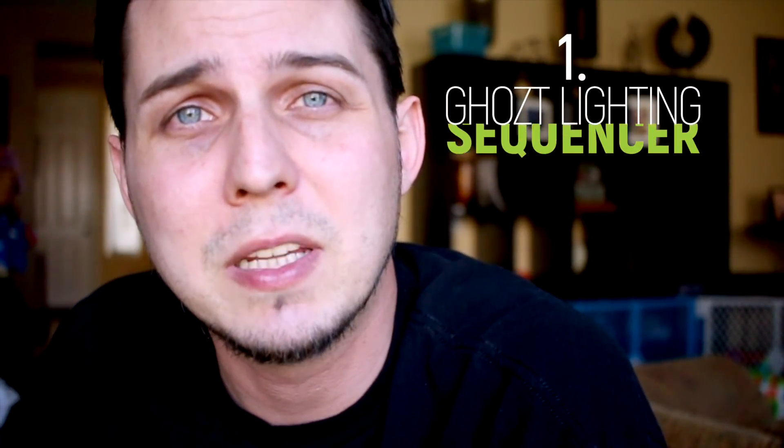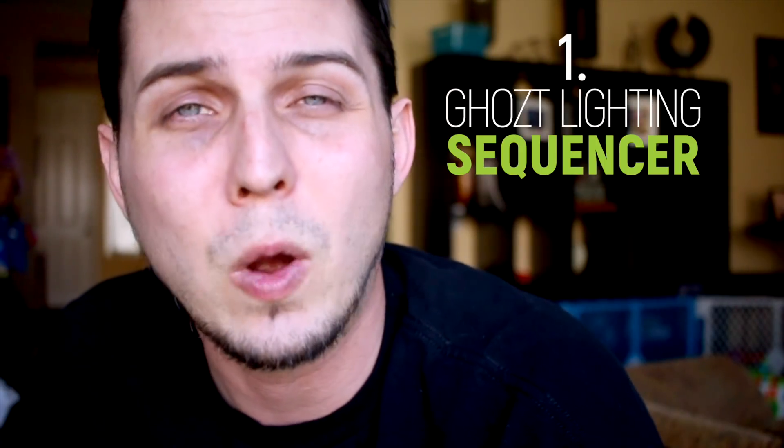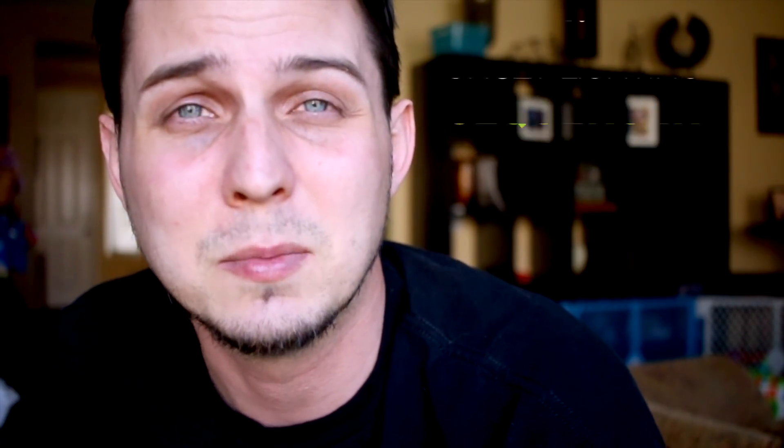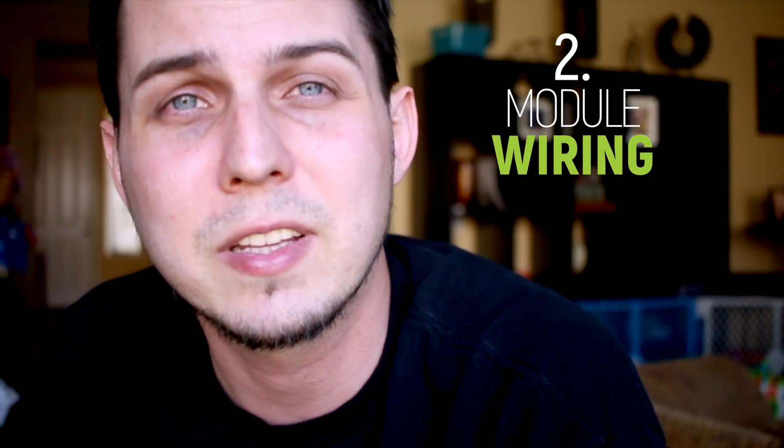Alright, so we're going to talk about three different topics today. The first is the ghost lighting module - what it is, what it does, and why we think it's so awesome. Two is how we wire everything up to that circuit board so it can be very easy to access when we're doing all of our wiring. If we want to plug something in, unplug it, doing a bunch of stuff like that, we want it to be simple. So we're going to show you how we do that.